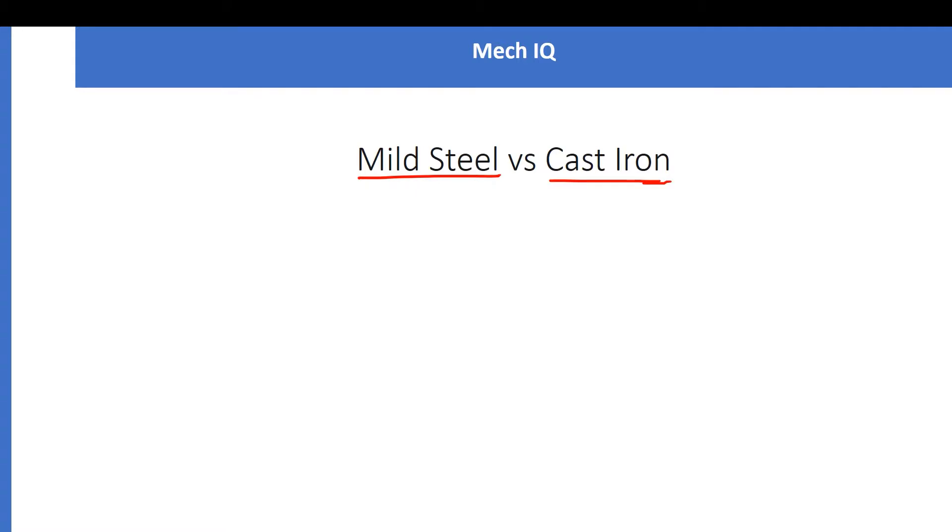Let's see the iron-carbon phase diagram. Here, 100% is ferrous and carbon is 0%. At this point, carbon is 0.25%, and at this point it's 2%. These are the key points on the diagram.